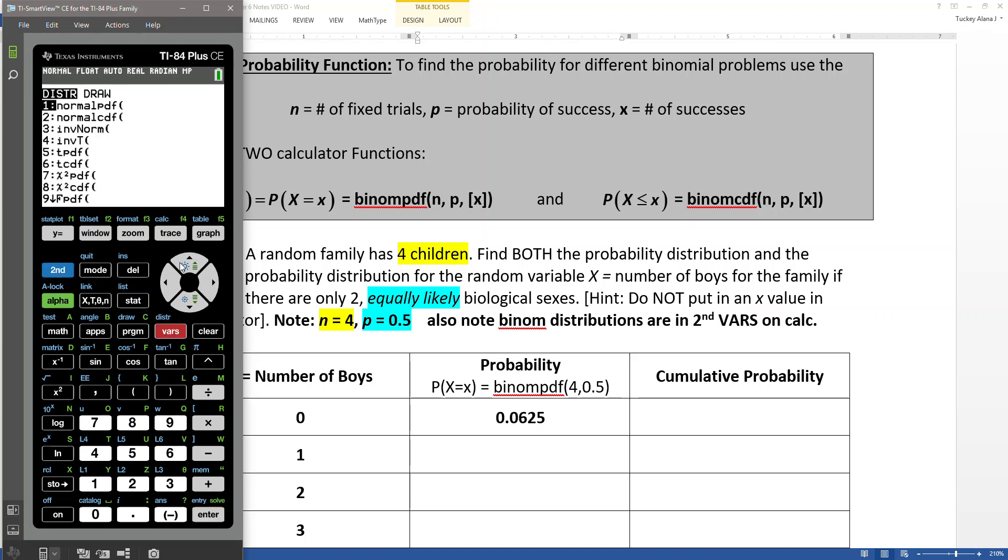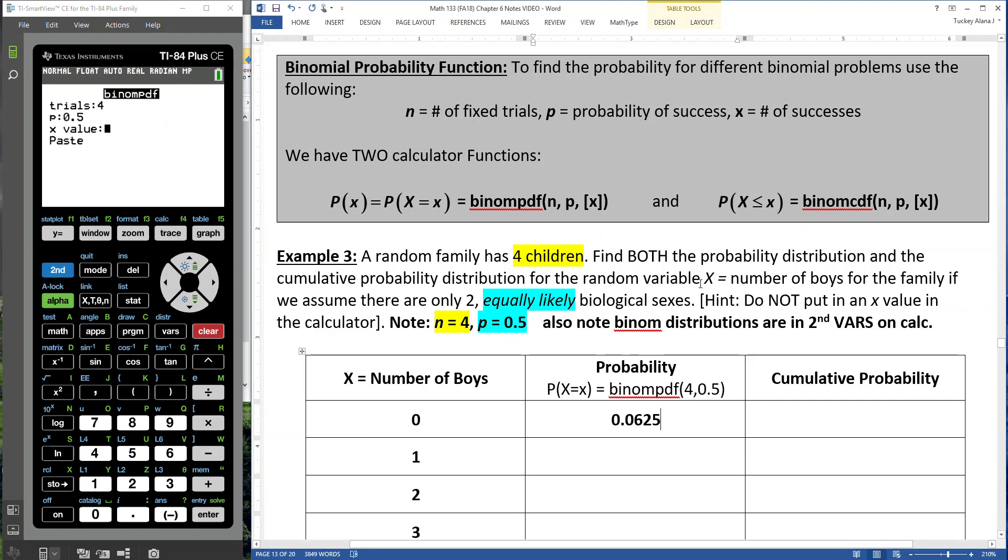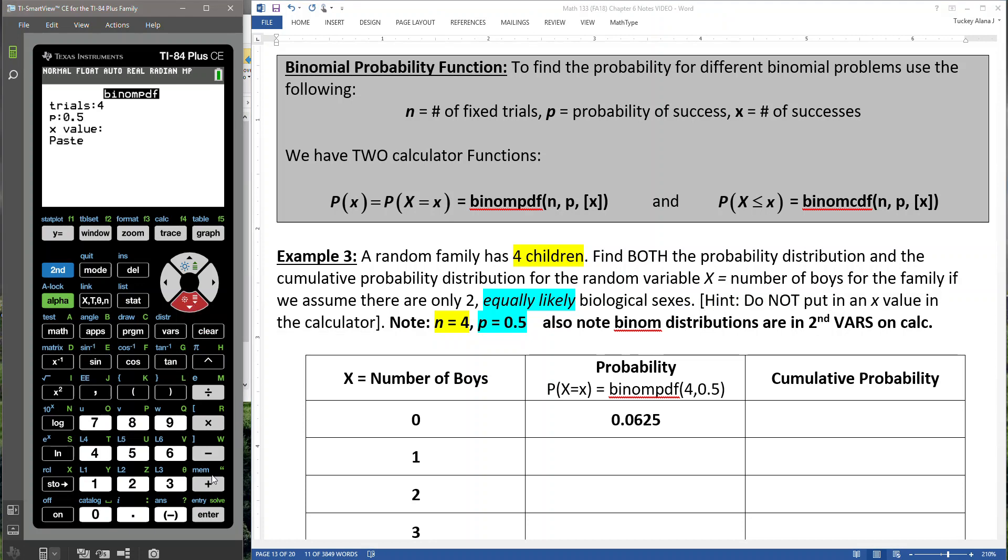So what if I don't put in anything? So if I go to second distribution, and by the way, if you know it's letter A, you can actually hit alpha A, and it'll take you to binom PDF. So suppose I leave the X value blank as suggested right here. So don't put in an X value. See what happens. So I'm not going to put in an X value. So let me paste. So it's just 4 and then 0.5. And if I press enter, it'll actually give me all of the numbers.